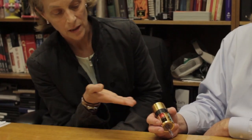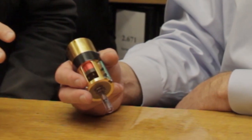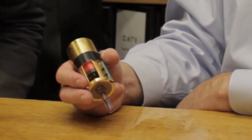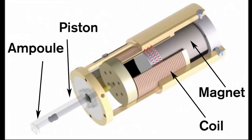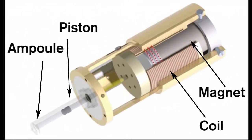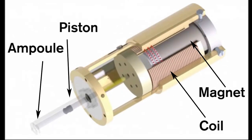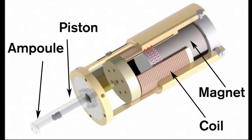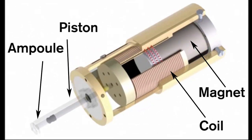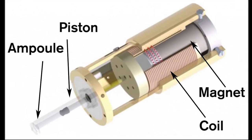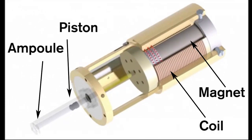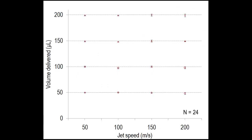So here you can see the heart of the Lorentz force actuated, the heart of our actual technology. There's a magnet in the centre of the jet injector that's surrounded by a coil of wire. And when we apply a current to the coil, we create a Lorentz force that pushes this piston, which forces the drug out of the ampoule.